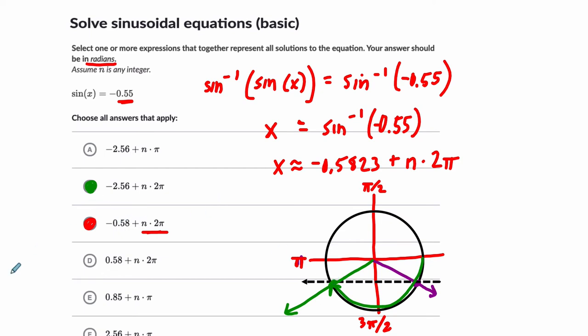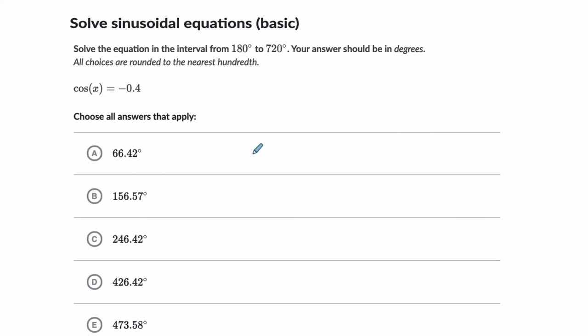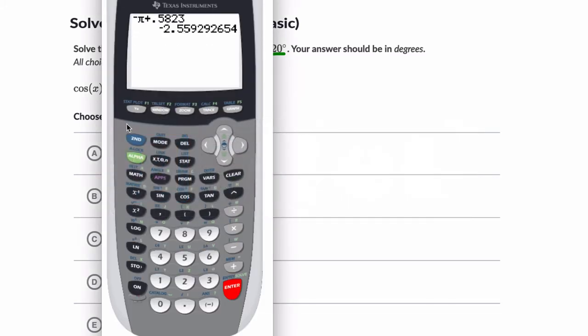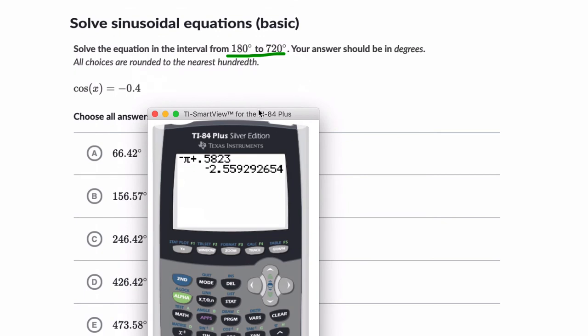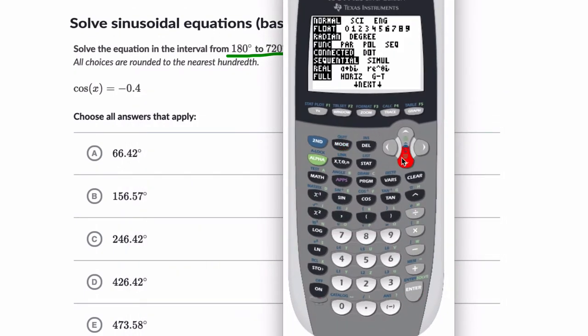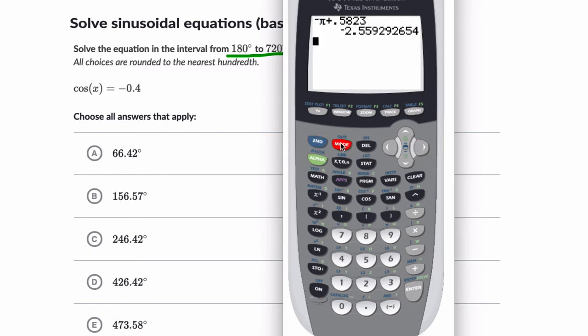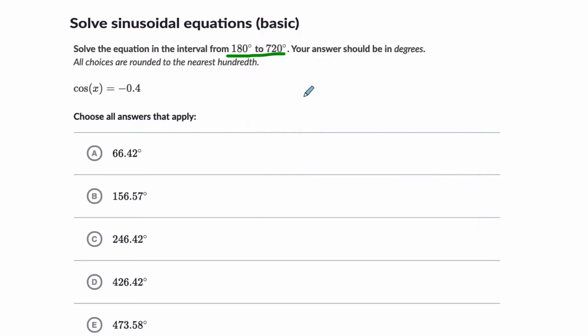All of these problems are somewhat similar. In this one they specify an interval. Let's just jump right to it - let's find the inverse cosine of this. Here we are in degrees, so I go to mode, down to degree, quit out. Now I'm going to hit second cosine negative 0.4.